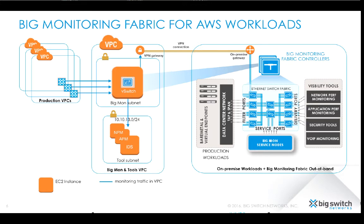In customer deployments of Big Monitoring Fabric on AWS, the same virtual switch and tool instances can be deployed to handle monitoring traffic from multiple production VPCs.